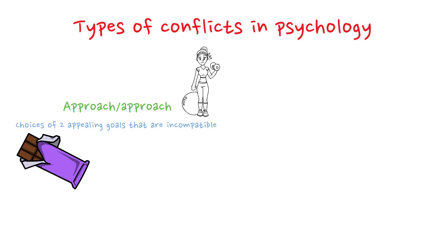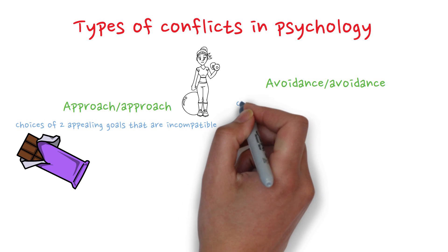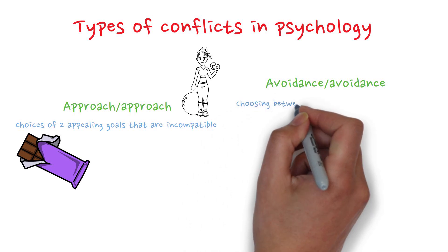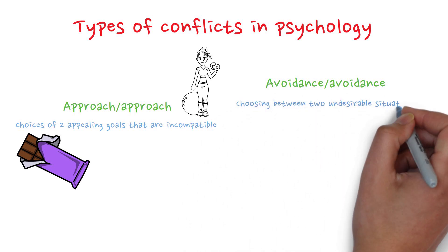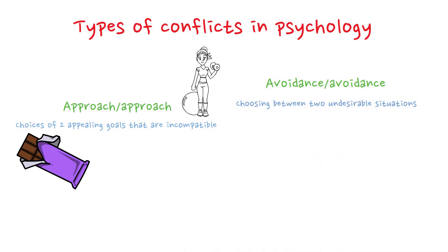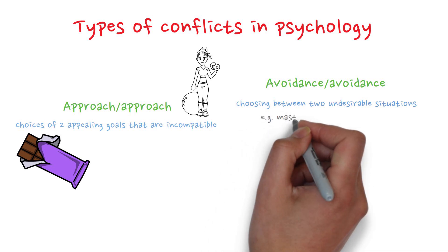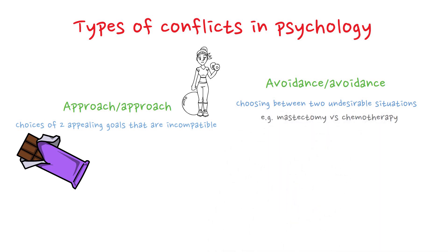Number two is the avoidance-avoidance conflict. It's choosing between two undesirable situations. One of the most used examples is being diagnosed with breast cancer where the treatment options are mastectomy and chemotherapy. They both have horrible side effects, so both these options would be considered undesirable.